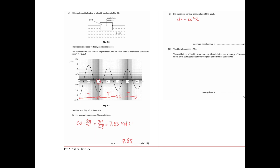To find the maximum, we look at the graph. The value of around 1.3 and minus 1.5 — minus 1.5 is the maximum magnitude, so the maximum amplitude is 1.5 cm. Using omega of 7.85 from part 1 and x of negative 1.5 times 10 to the minus 2, the maximum acceleration works out to 0.925 metres per second squared.